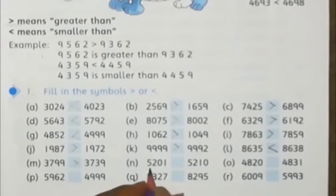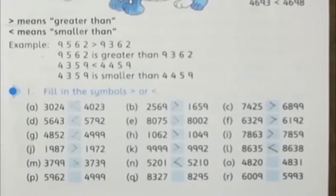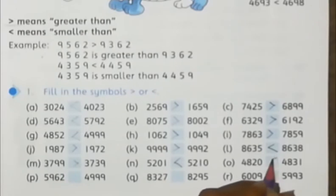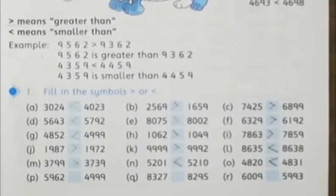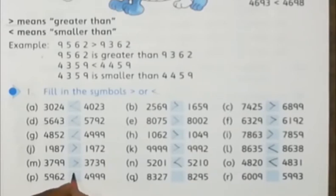In part N we have 5201. In part O we have 4820 and 4831 — so the smaller than sign will be placed here. In part P we have 5962 and 4999, so 5962 is greater — we have to place the greater than sign.